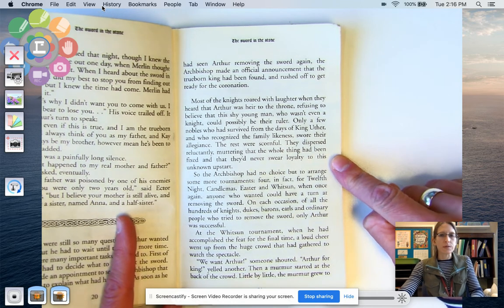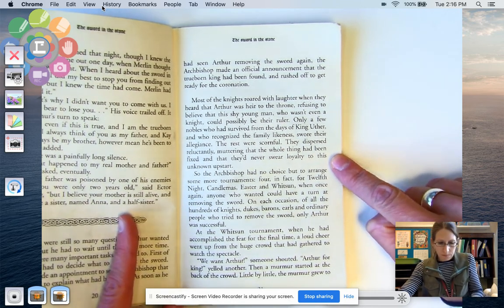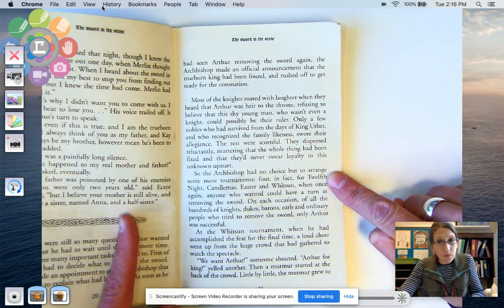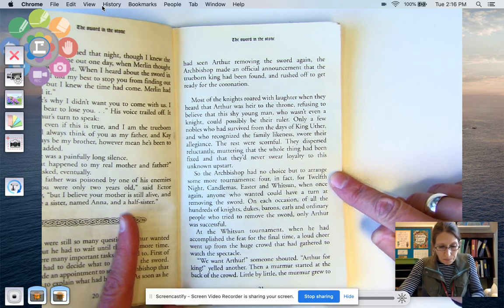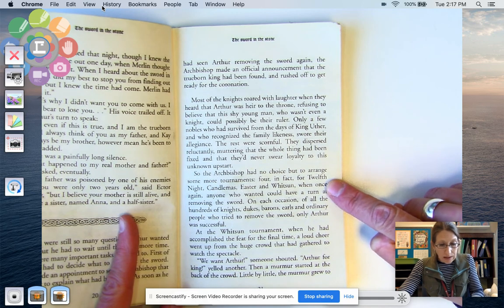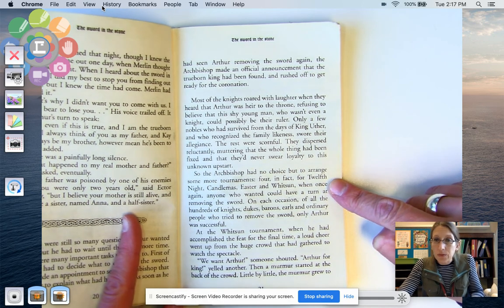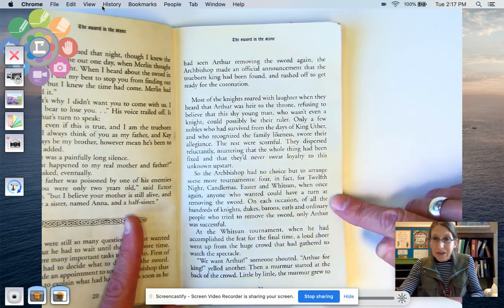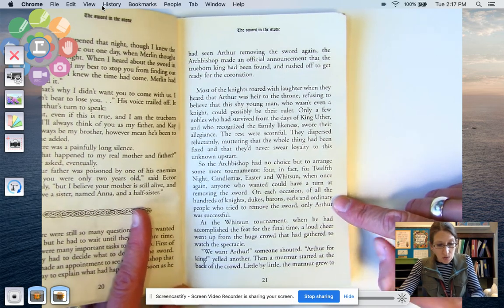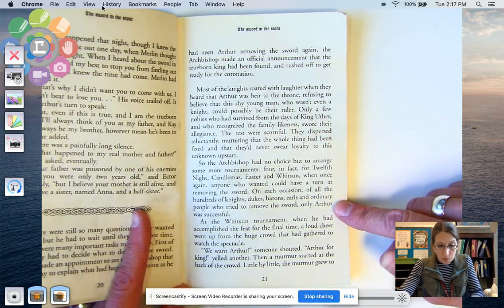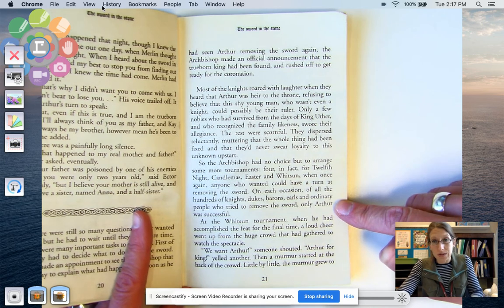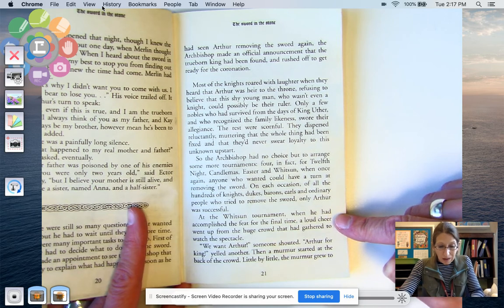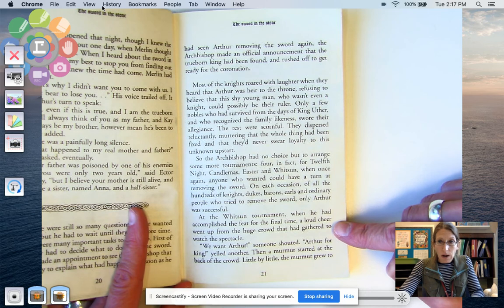The rest were scornful. They dispersed reluctantly, muttering that the whole thing had been fixed and that they'd never swear loyalty to this unknown upstart. They're like, oh, who is this child? No, we're not. He's not our king. So the archbishop had no choice but to arrange some more tournaments. He's like, he has to prove himself. For, in fact, for Twelfth Night, Candlemas, Easter, and Whitsun. Those are holidays. When once again, anyone who wanted could have a turn at removing the sword. On each occasion of all the hundreds of knights, dukes, barons, earls, and ordinary people who tried to remove the sword, only Arthur was successful. At the Whitsun tournament, when he had accomplished the feat for the final time, a loud cheer went up from the huge crowd that had gathered to watch the spectacle.